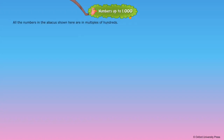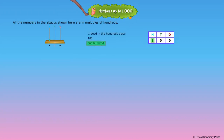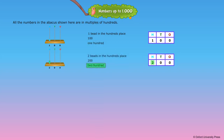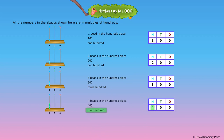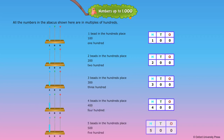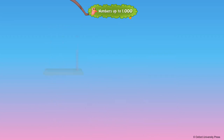All the numbers in the abacus shown here are in multiples of hundreds. One bead in the hundreds place equals one hundred. Two beads in the hundreds place equals two hundred. Three beads equals three hundred. Four beads equals four hundred. Five beads in the hundreds place equals five hundred.